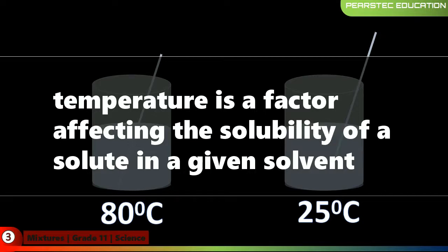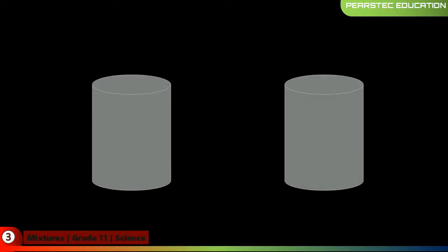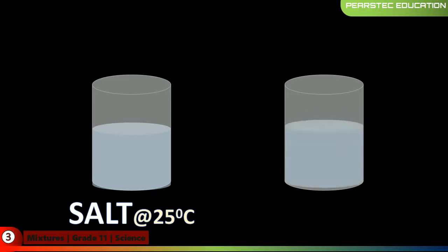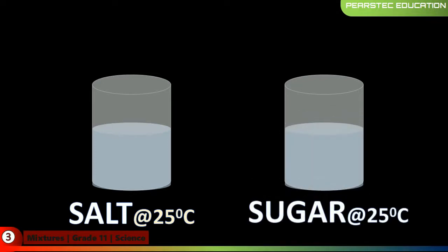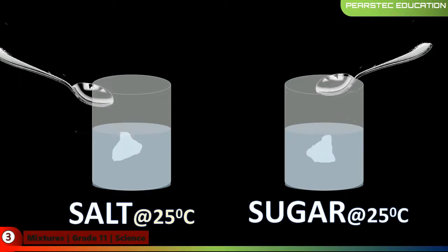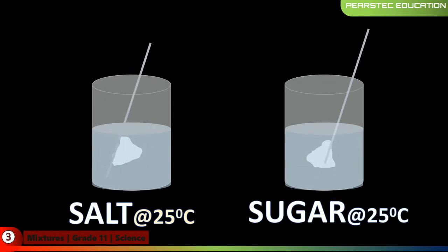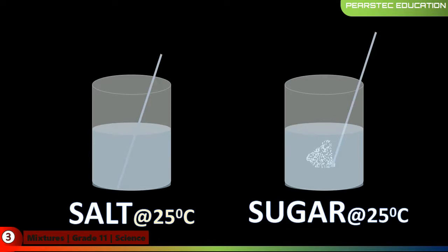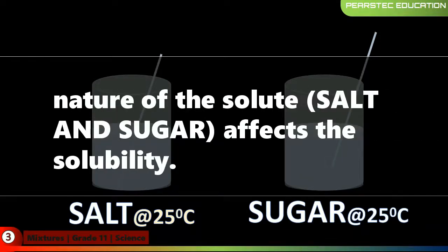In the next experiment, we are taking the same beaker — one with salt at 25 degrees Celsius and the other with sugar at 25 degrees Celsius. We are taking the same amount of salt and sugar and placing them in their respective beakers. You came to know that salt was faster to dissolve than sugar. This tells us the nature of the solute — here salt and sugar respectively — also affects solubility.